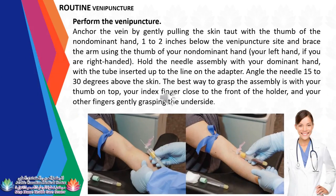Perform the venipuncture. Anchor the vein by gently pulling the skin taut with the thumb of the non-dominant hand, 1 to 2 inches below the venipuncture site. Hold the needle assembly with your dominant hand, with the tube inserted up to the line on the adapter. Angle the needle 15 to 30 degrees above the skin. The best way to grasp the assembly is with your thumb on top, your index finger close to the front of the holder, and your other fingers gently grasping the underside.